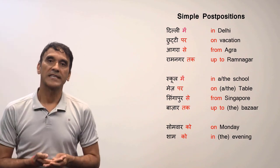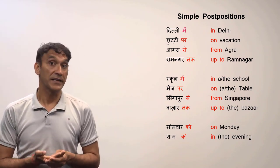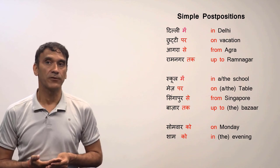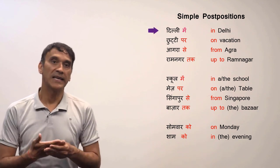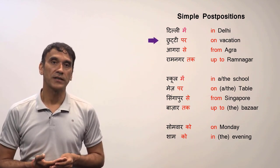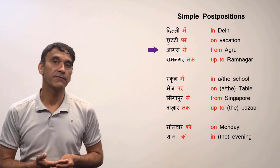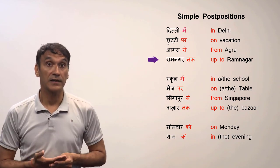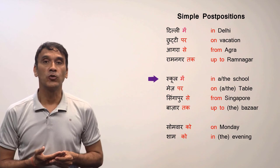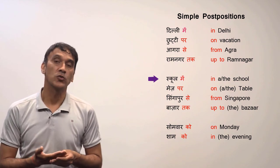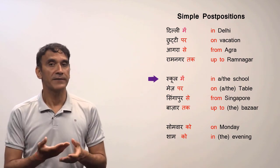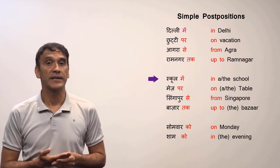Let's take some examples — I have marked the Hindi postpositions and English prepositions in red font. 'Delhi mein' means 'in Delhi.' 'Par' means 'on.' 'Agra se' means 'from Agra.' 'Ram Nagar tak' means 'up to Ram Nagar.' Then we have 'school mein' meaning 'in a school' or 'in the school' — Hindi does not have definite or indefinite articles.